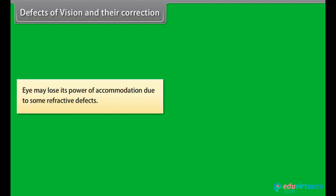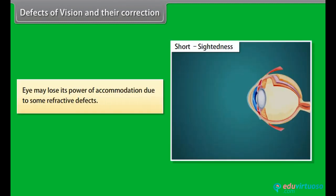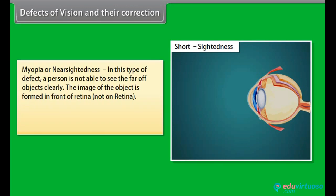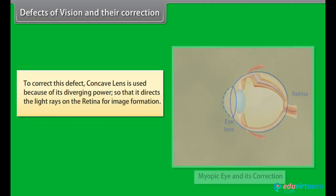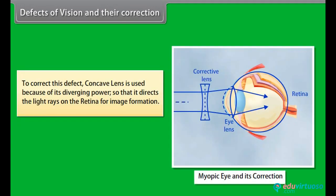Defects of Vision and Their Correction: The eye may lose its power of accommodation due to some refractive defects, of which there are three. Myopia, or near-sightedness: in this defect, a person is not able to see far-off objects clearly. The image of the object is formed in front of the retina. It is caused either due to elongation of the eyeball or due to excessive curvature of the eye lens. To correct this defect, a concave lens is used because of its diverging power, so that it directs the light rays onto the retina for image formation.